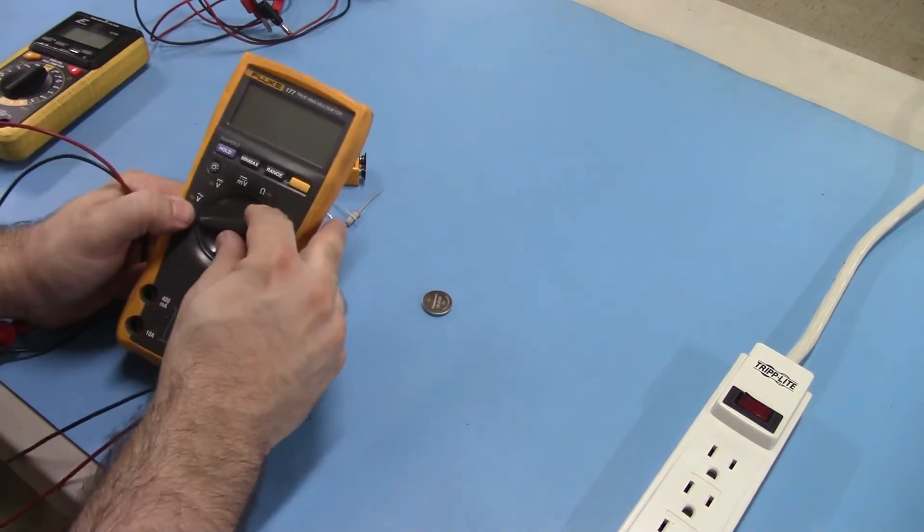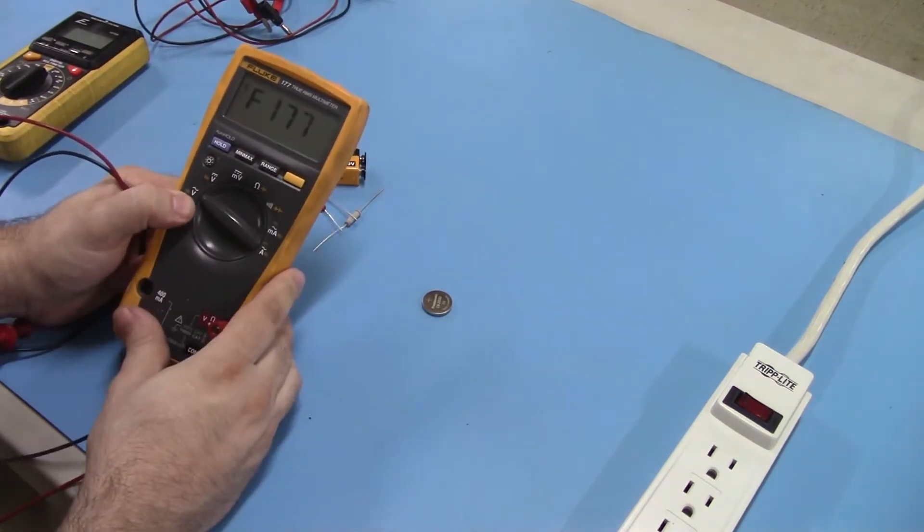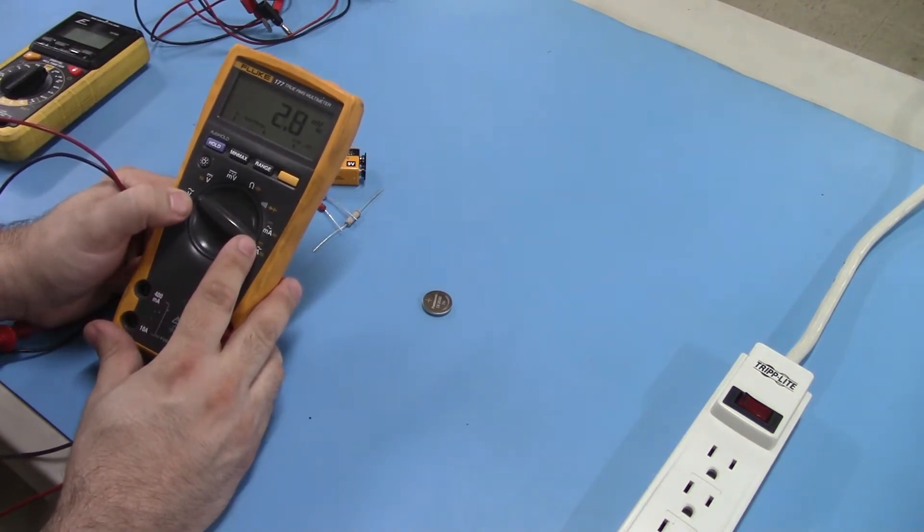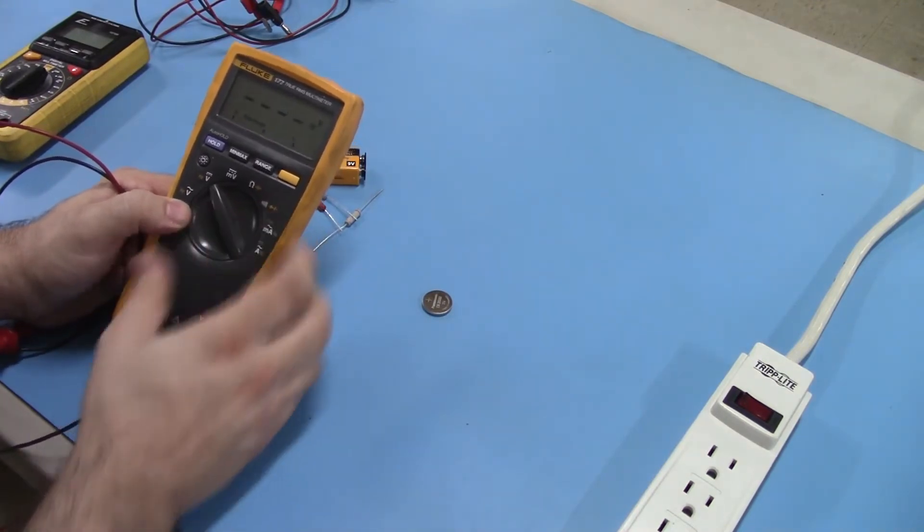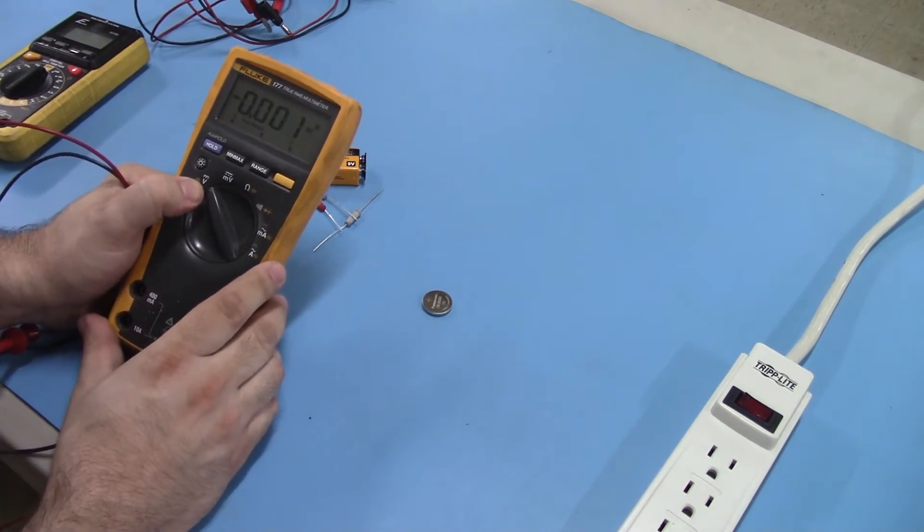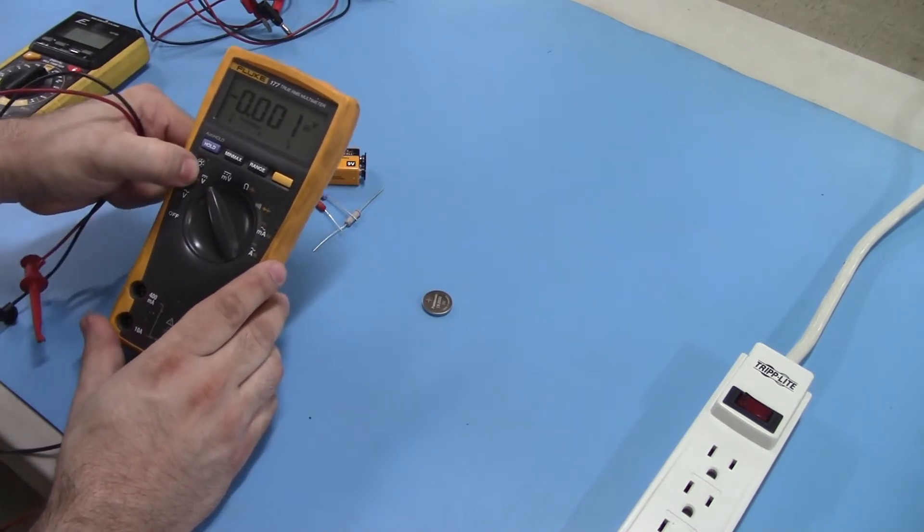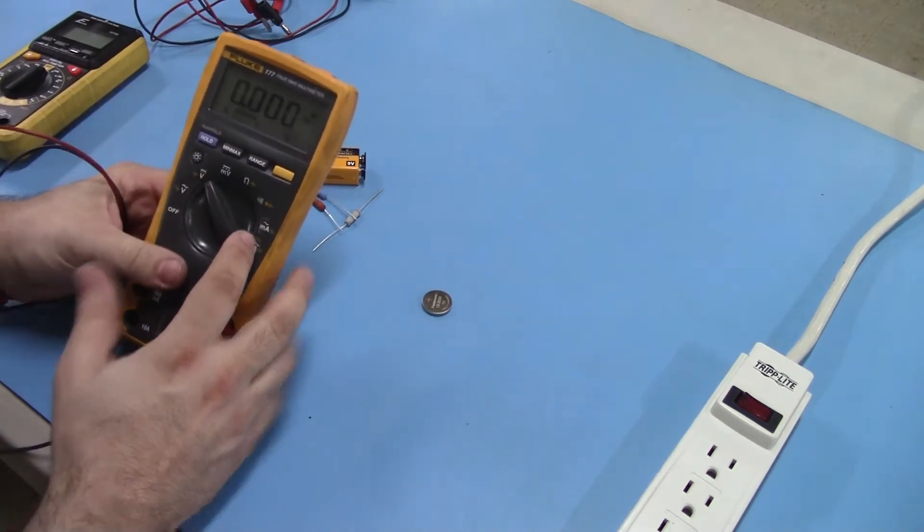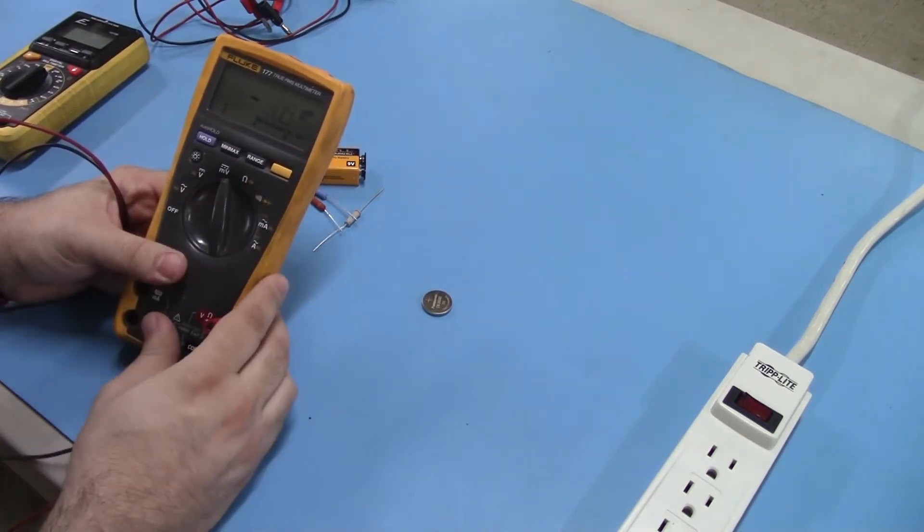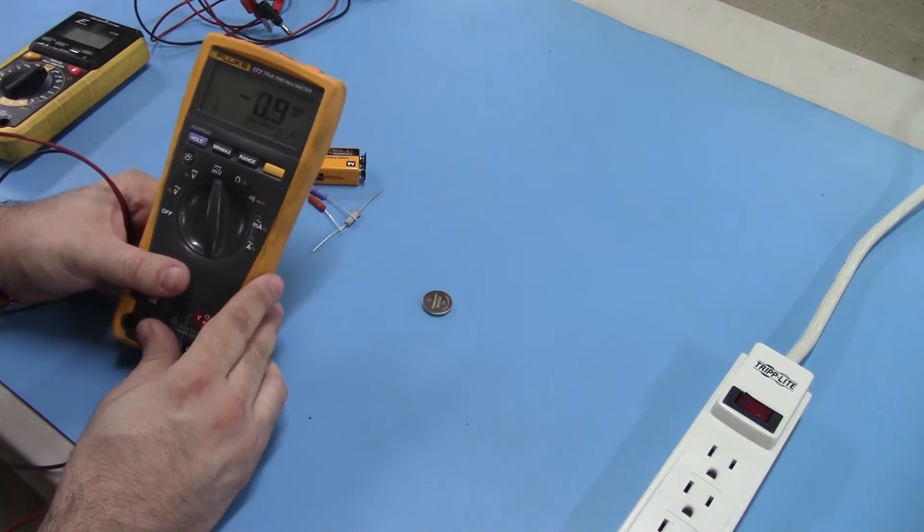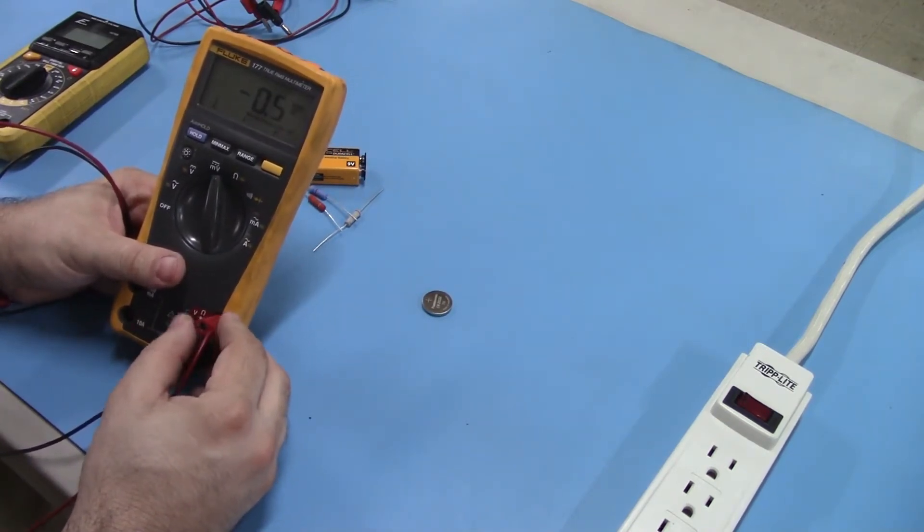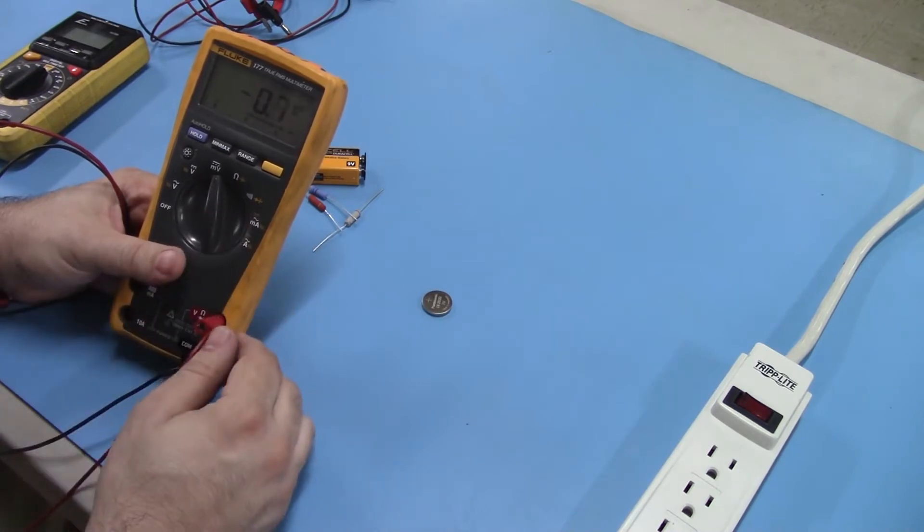To start off, we have our AC volts, which is the V with the sine wave above it there. And we have volts DC, which is your DC indicator there, which is the line with the dotted line under it. Millivolts DC. If you're measuring really small voltages, you shouldn't normally need this when you are doing generator measurement.